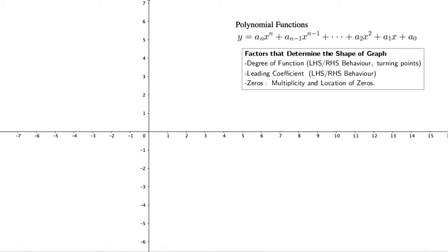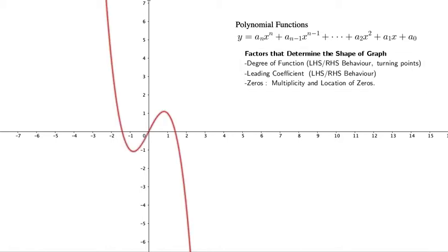This will determine the left-hand and right-hand side behavior. You don't need to take this down quite yet. We'll be going over this quite extensively. But the degree of the function also determines the turning points. You may be asking, what is the turning point? Well, perhaps it's the vertices.